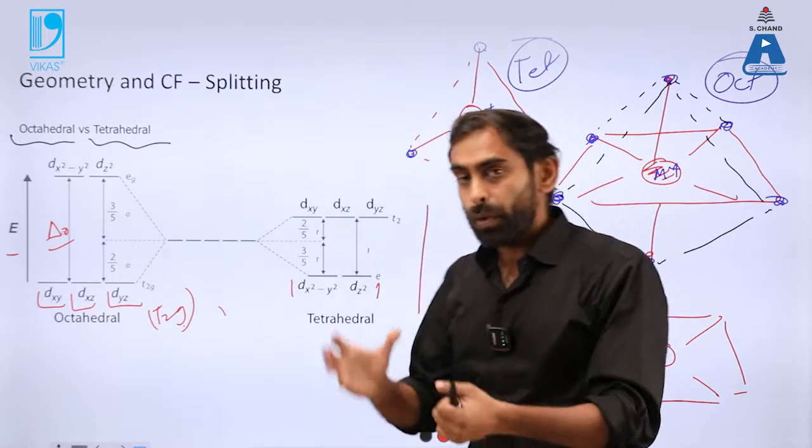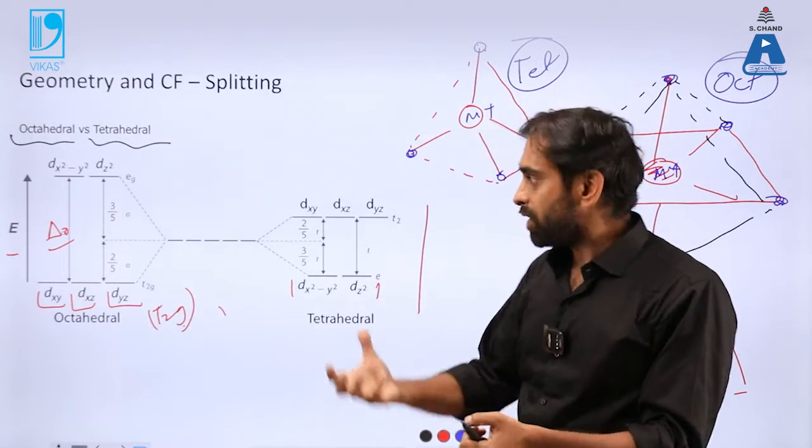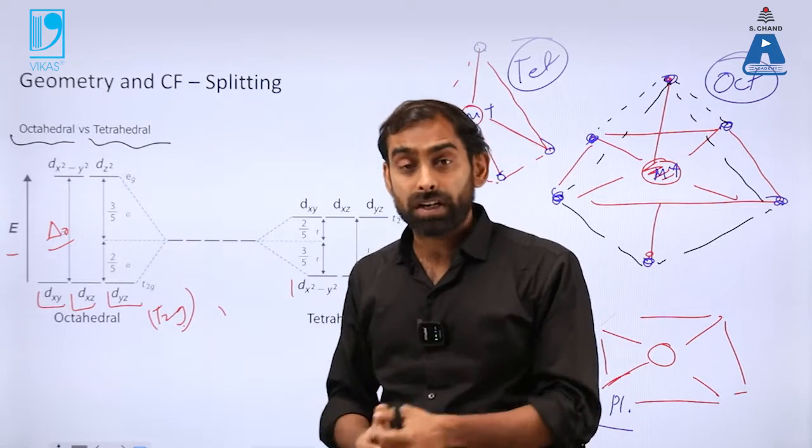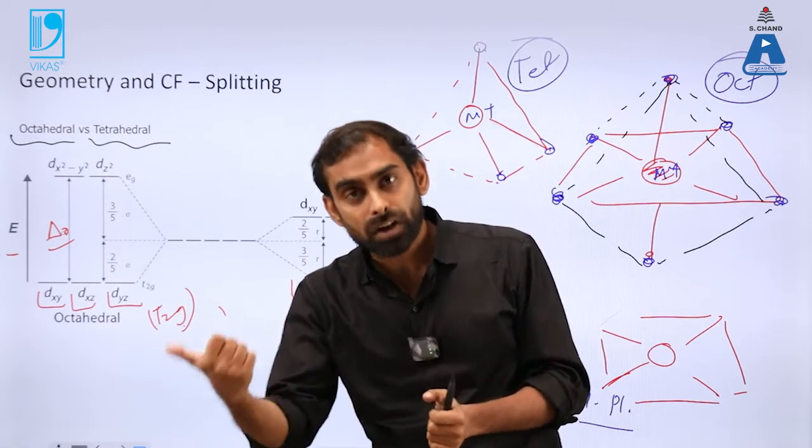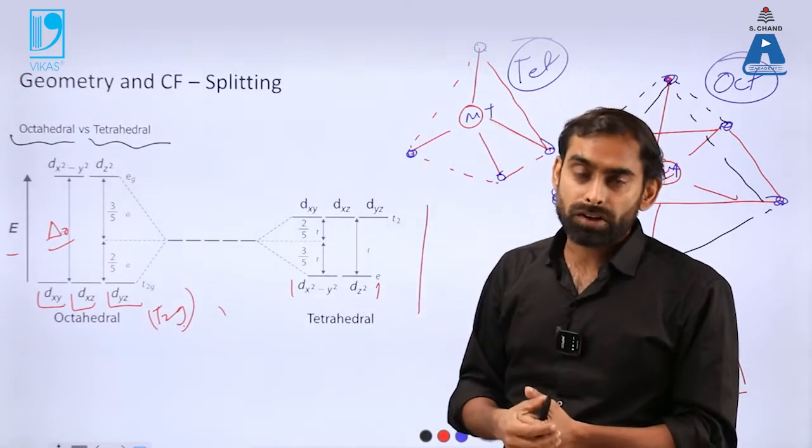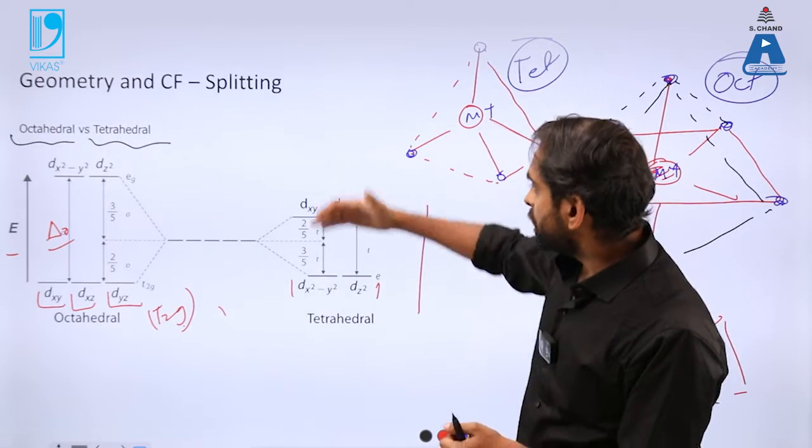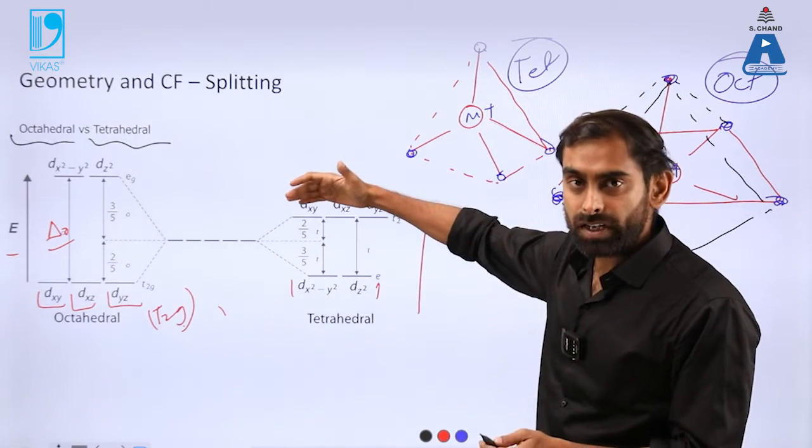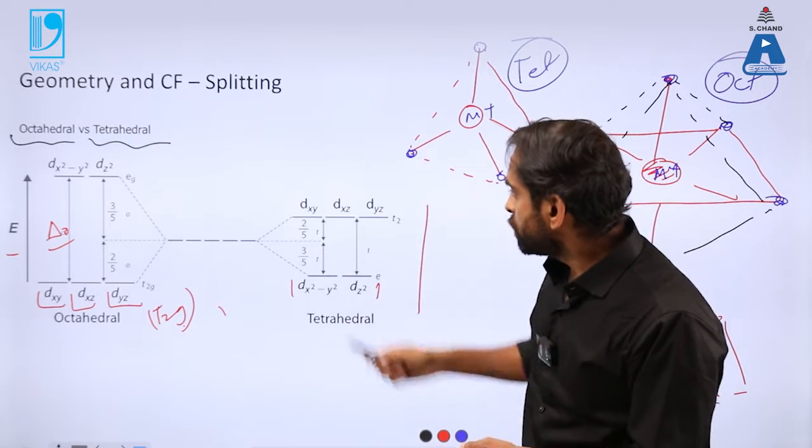So that is the reason: which orbital or which type of d orbital is interacting directly or coming close to orbitals or electronic clouds of ligands, they reach a higher position in the energy state.